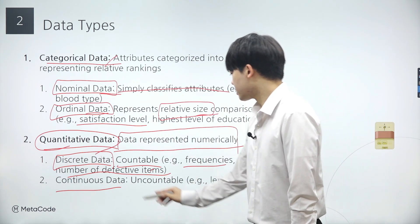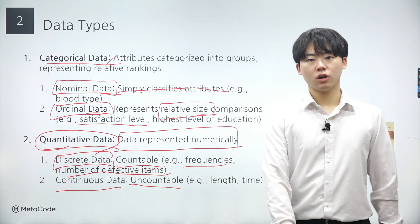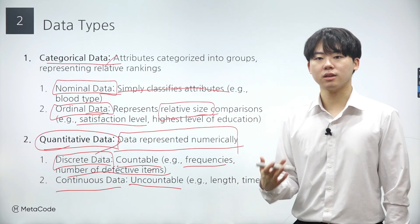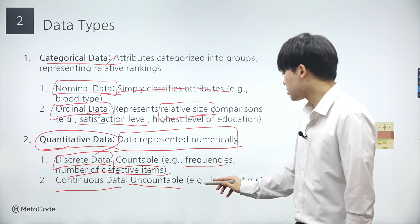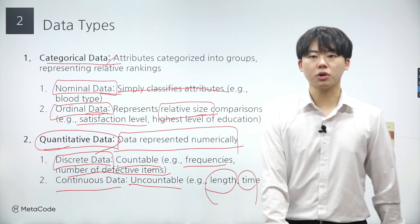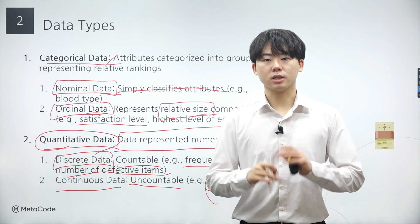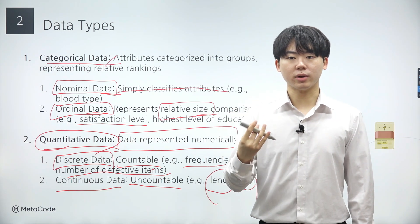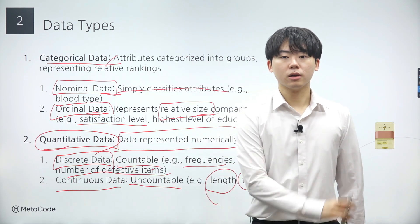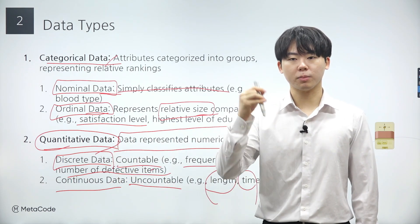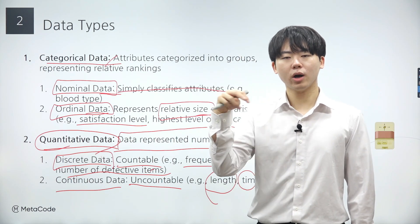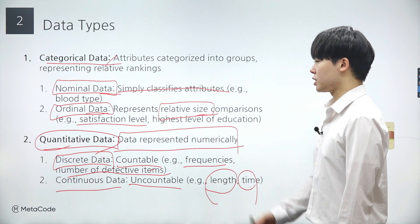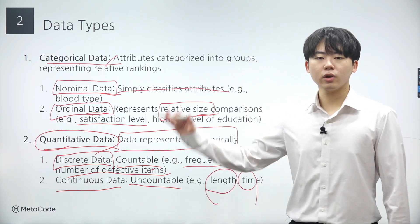In contrast, continuous data is uncountable. For instance, you cannot count every real number between 0 and 1 — there are infinitely many real numbers between 0 and 1. Length and time serve as examples of continuous data. Length, such as height, is not countable since there are countless numbers between 170 and 171 centimeters, such as 170.1, 170.11, and so on, depending on how accurately you're measuring heights. There are infinitely many possibilities within the range, and that's why length and heights are continuous data.